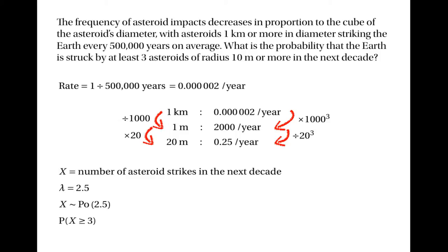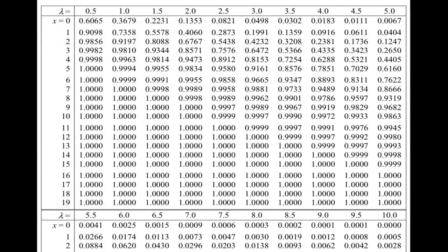Now the question is asking for the probability that x is greater than or equal to 3, and that will be one take away the probability that x is less than or equal to 2. Looking at the tables, we find where lambda is 2.5, and we come across from 2 to find the probability in the relevant column, and that turns out to be 0.5438.